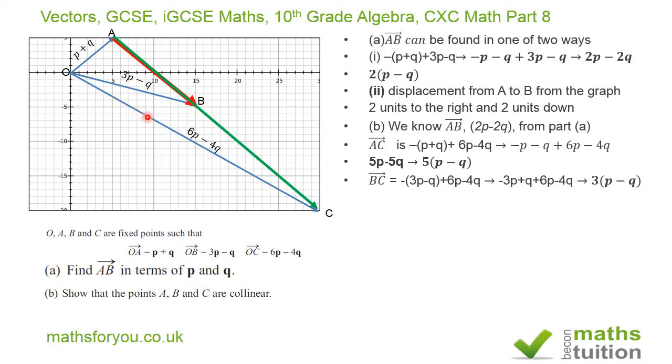And then from O to C. When you remove brackets, collect like terms, and simplify, you end up with 3(P minus Q).